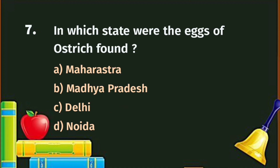Question number 7. In which state were the eggs of ostrich found? A. Maharashtra, B. Madhya Pradesh, C. Delhi, D. Noida. Noida is not a state, and Delhi is a union territory, so those are invalid. The correct answer is A - Maharashtra.